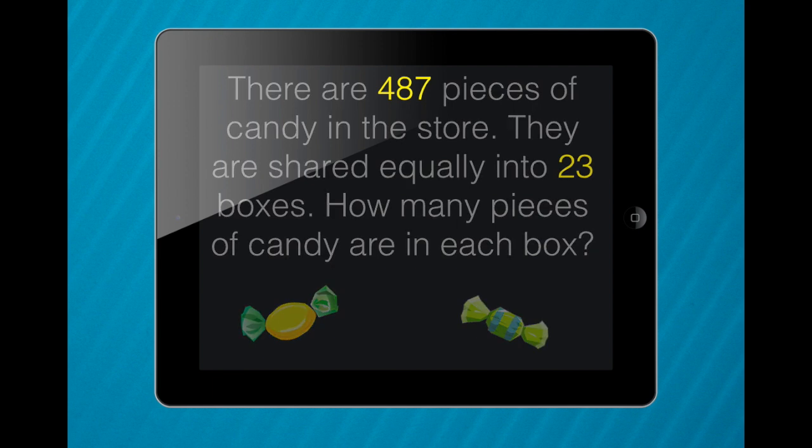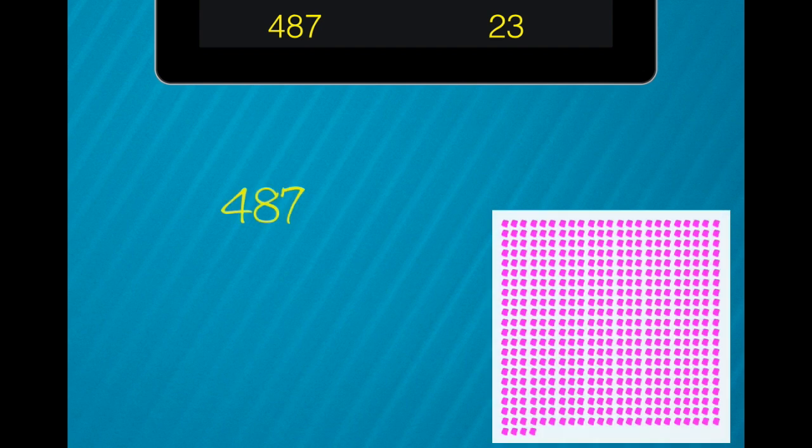Once the students have these two numbers they can set up their division problem. The larger number is the total number of candies. In this case there are 487 candies. The next number is how many equal shares the candies need to be shared into. In this case it's 23.